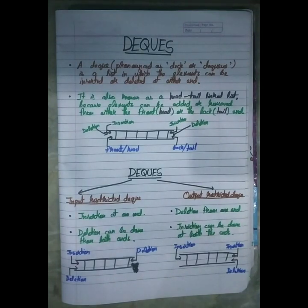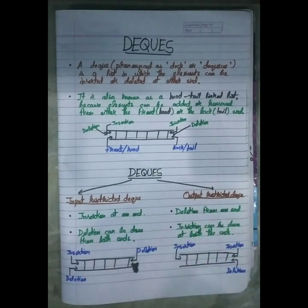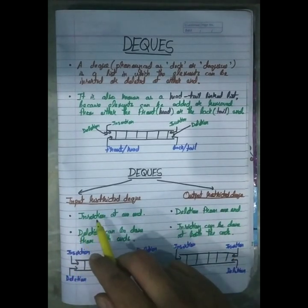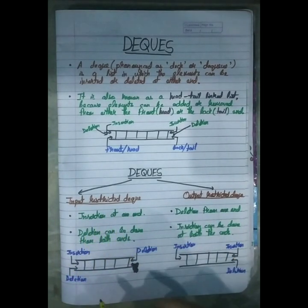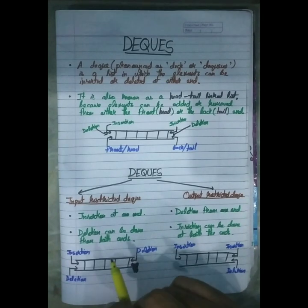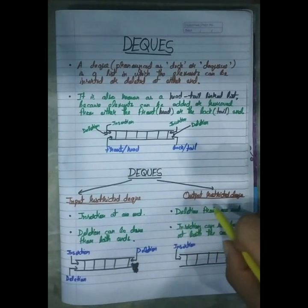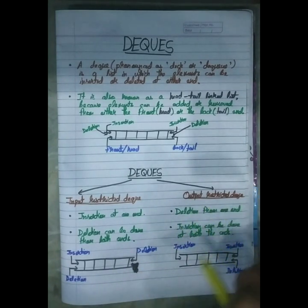This is what DQ basically is. Now, DQ is further divided into two parts: input restricted DQ and output restricted DQ.